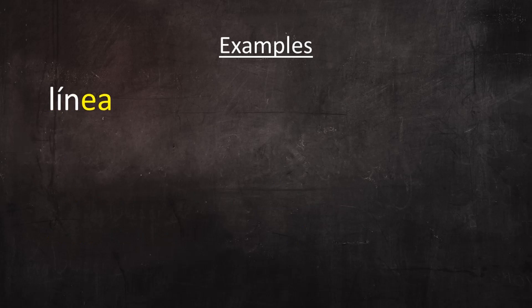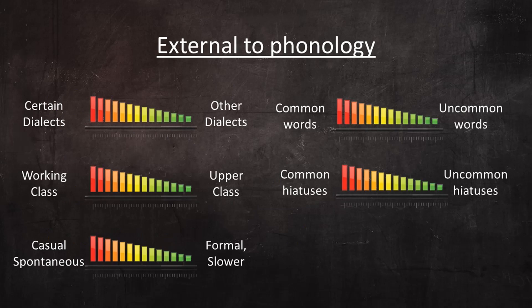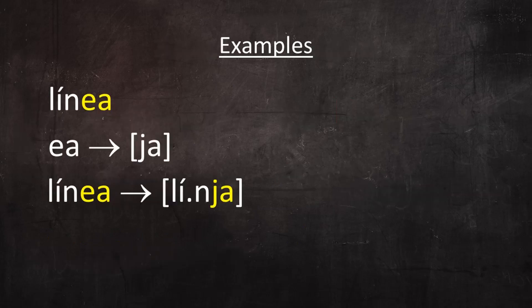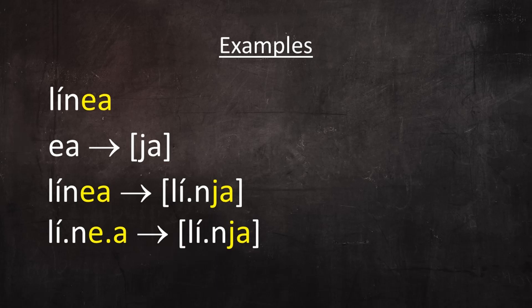The word línea contains the hiatus E-A, which could resolve to YA. Based on all the external factors, línea may resolve to linea. Observe that in the resolved version, the word is one syllable shorter. Línea → linea.